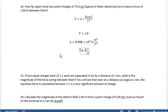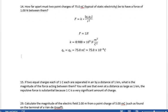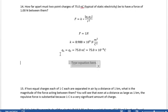Q1 equals Q2 equals 75.0 nanocoulombs, which is 75.0 times 10 to the minus 9 coulombs, and we're looking for R.